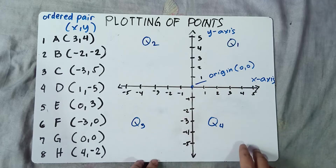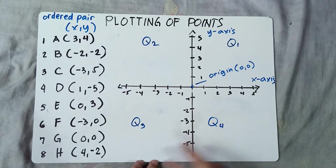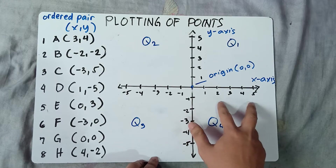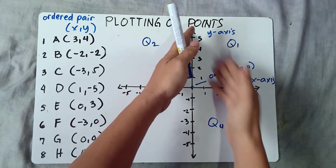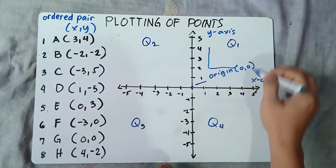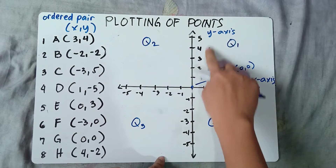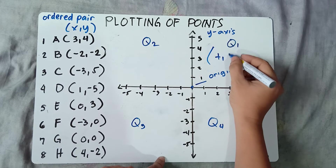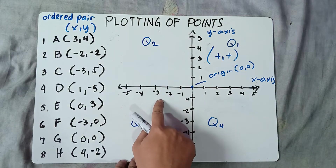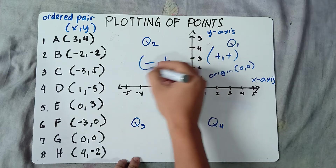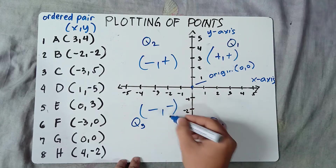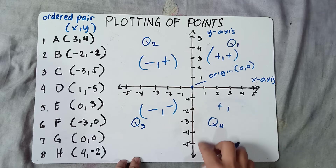In the Cartesian plane, we have four quadrants. The quadrants are designated by different signs. For quadrant 1, x is positive and y is positive. For quadrant 2, x is negative and y is positive. For quadrant 3, x is negative and y is negative. For quadrant 4, x is positive and y is negative.